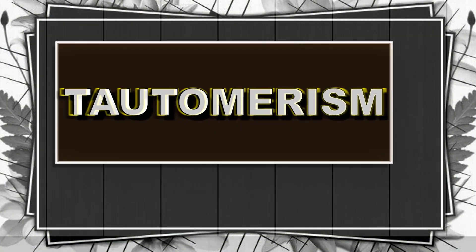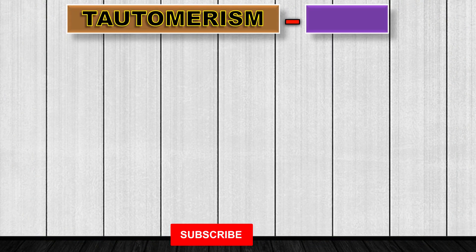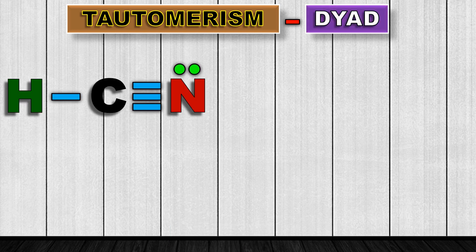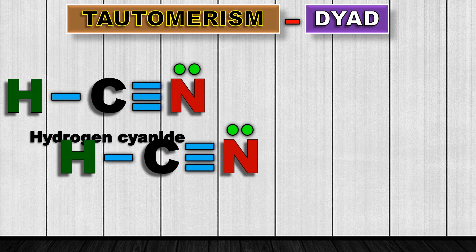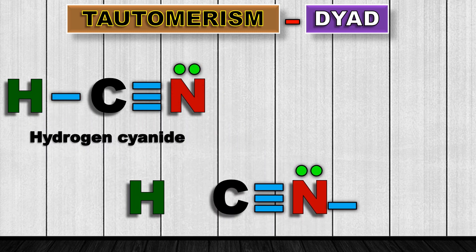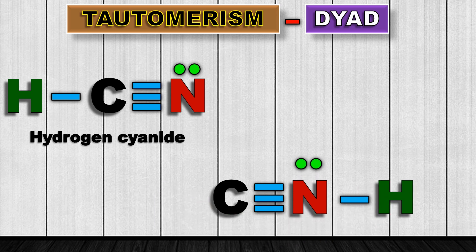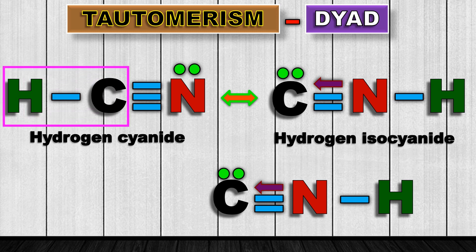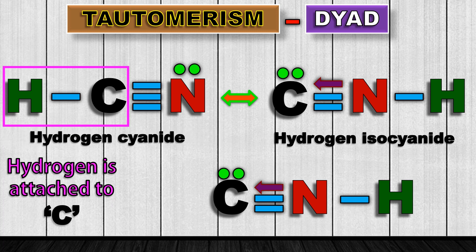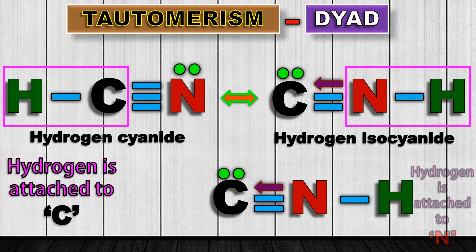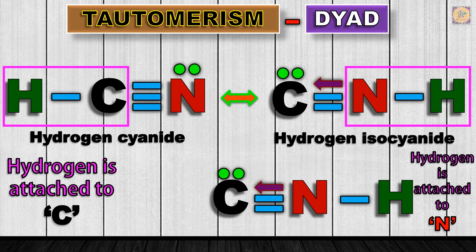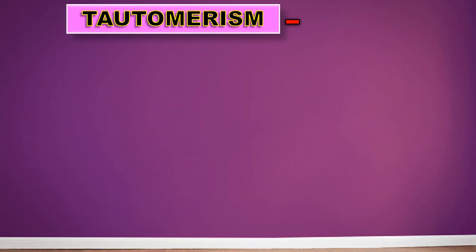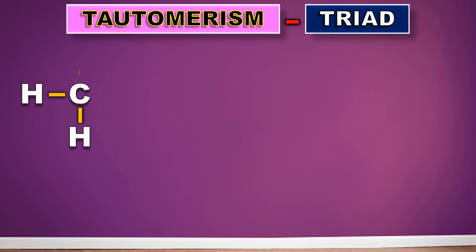Tautomerism might be new to you. In tautomerism we have two types. The first one is a dyad system. Let us consider the hydrogen cyanide example, where the hydrogen atom shifts towards the nitrogen and gets connected, and the lone pair shifts to form a coordinate bond. We get a new molecule which is hydrogen isocyanide. In the first one hydrogen is attached to the carbon; in isocyanide it is attached with the nitrogen atom. It shifts between two of the groups — so that is the dyad system.